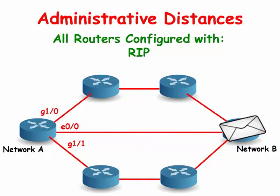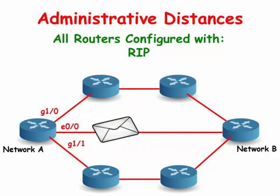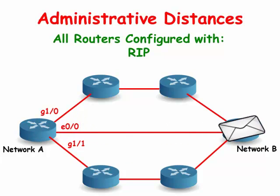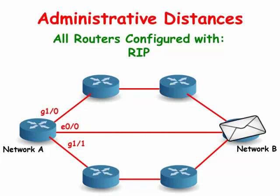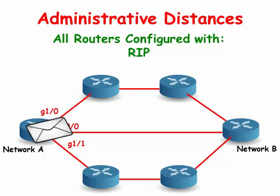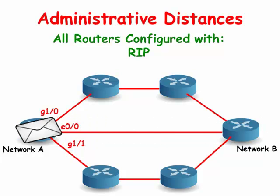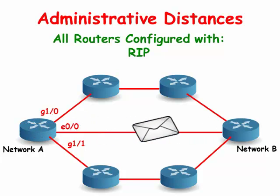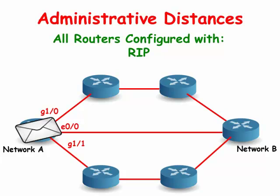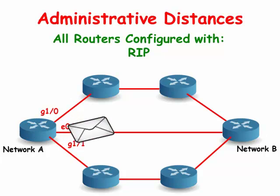We are looking at a scenario where all the network routers are configured with the RIP protocol. Packets from network A are being sent to network B. Since the RIP protocol uses hop count to decide the best path between networks, it will choose the Ethernet 0/0 interface to forward the packets out of. The Ethernet interface is only one hop count away from network B, but both gigabit Ethernet interfaces are three hops away.